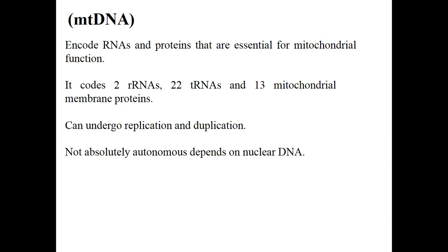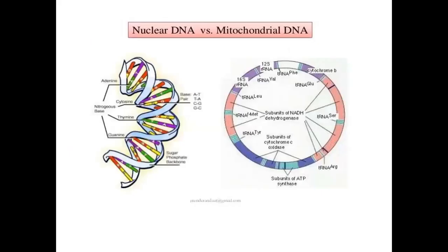Because mitochondrial membranes have many proteins for different functions, the proteins encoded by mitochondrial DNA can undergo duplication and replication processes, though mitochondria are not absolutely autonomous and depend on nuclear DNA for many functioning proteins. Nuclear DNA is the familiar double helix described by Watson and Crick in 1953, while mitochondrial DNA is circular in shape and has different subunits including RNAs and transfer RNAs.